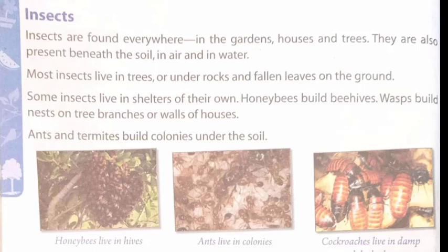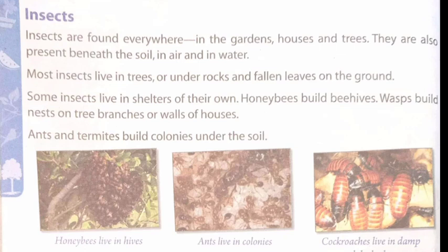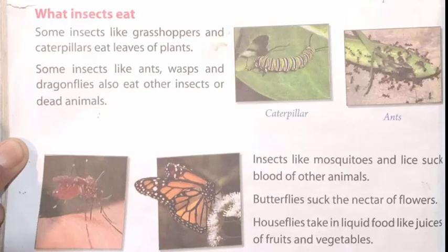Insects: insects are found everywhere — in gardens, houses and trees. They are also present beneath the soil, in air and in water. Most insects live in trees or under rocks and fallen leaves on the ground. Some insects live in shelters of their own: honeybees build beehives, wasps build nests on tree branches or walls of houses, and ants and termites build colonies under the soil.